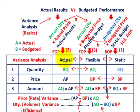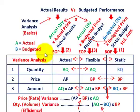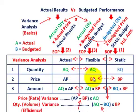Now we can do our variance analysis between our actual, flexible, and static amounts. With these three amounts, you have quantity inputs and price or cost inputs. I have everything color coded here: AQ in green is actual quantity, BQ in blue is budgeted quantity, AP in sort of bluish-black is actual price, and BP in red is budgeted price.